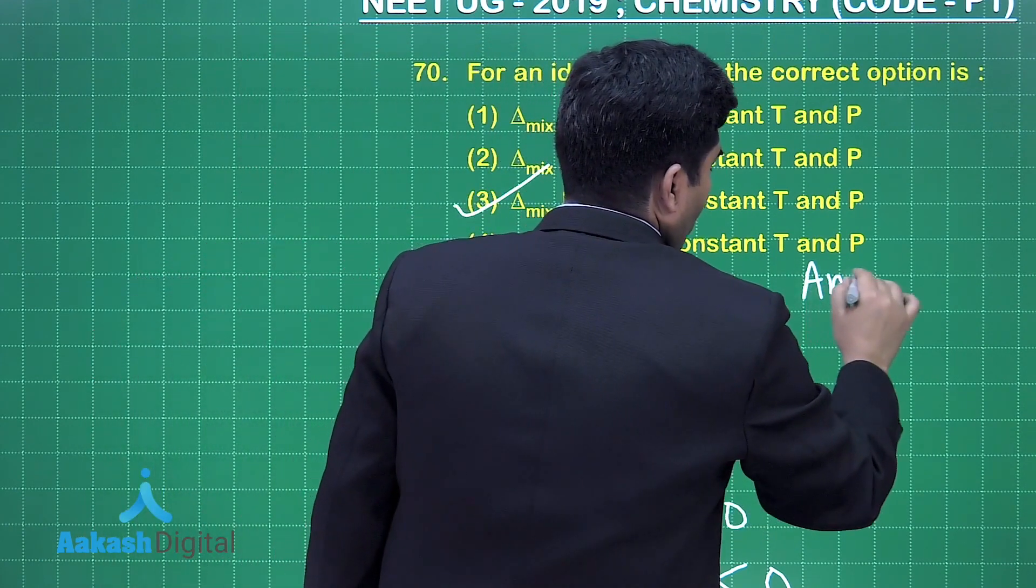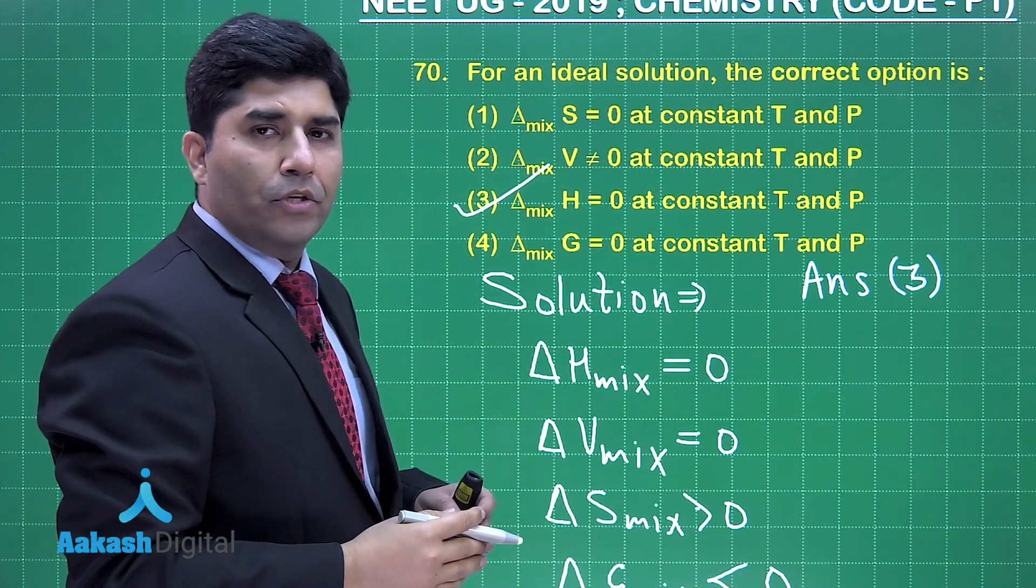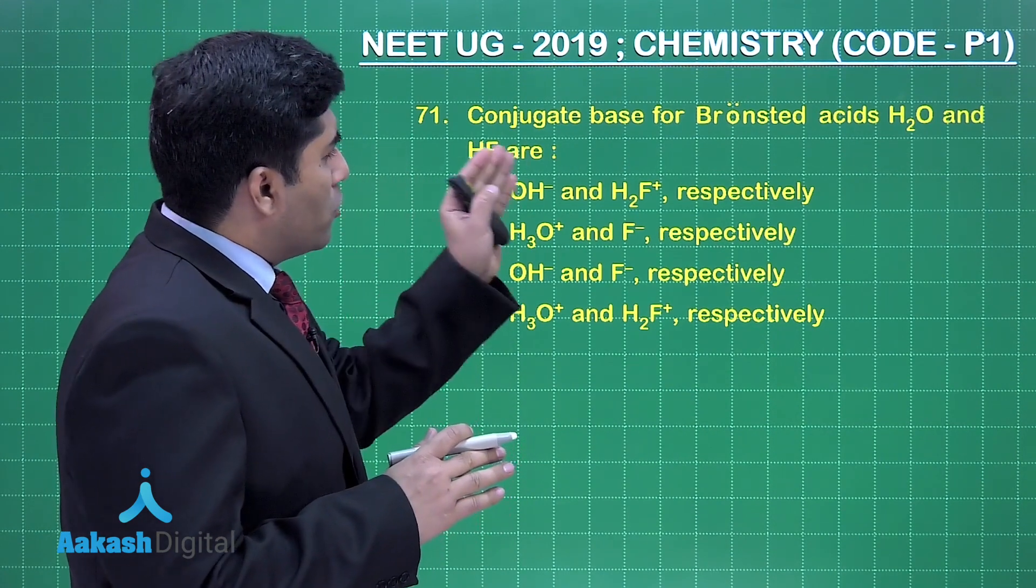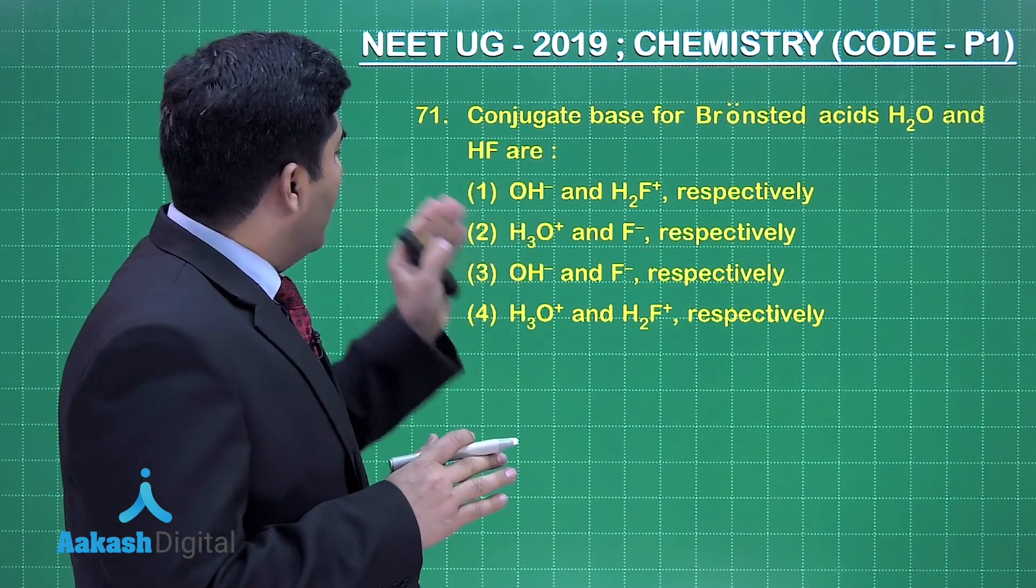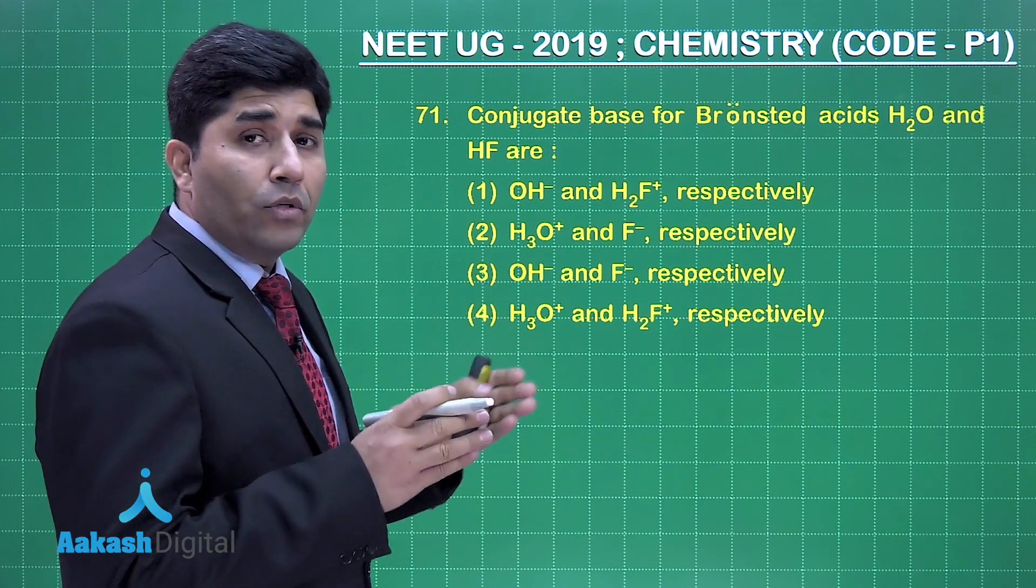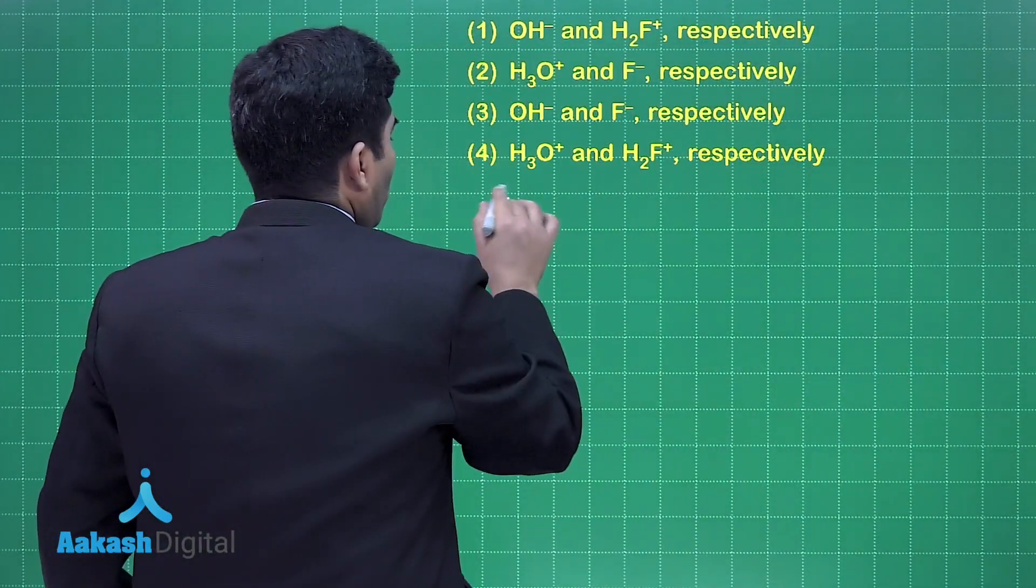Let's move on to the next question. In this question they are asking conjugate base of Bronsted acids H2O and HF are, and four options are given. We have to find out the correct option, so let's move on to the solution.